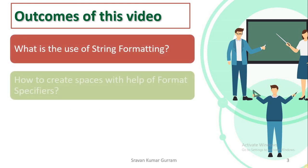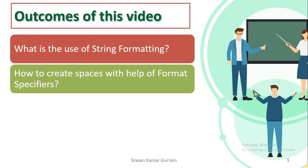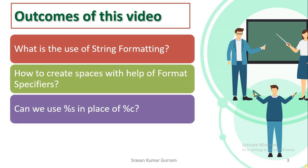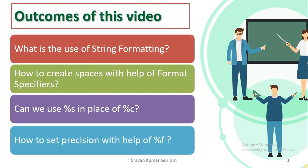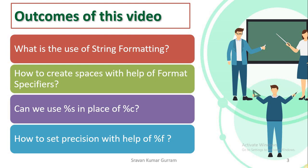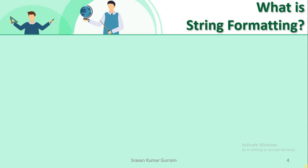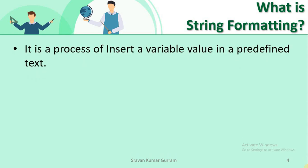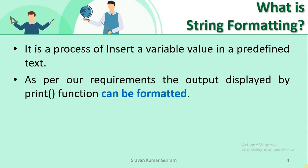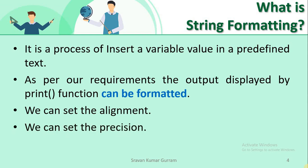What is the use of string formatting? How to create spaces with the help of format specifiers? Can we use %s in place of %c? How to set precision with the help of %f? String formatting is a process of inserting a variable value into a predefined text. As per our requirements, the output displayed by the print function can be formatted. With the help of string formatting, we can set alignment — left or right. We can also set precision values when working with floating point values.